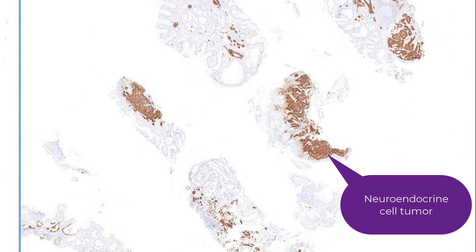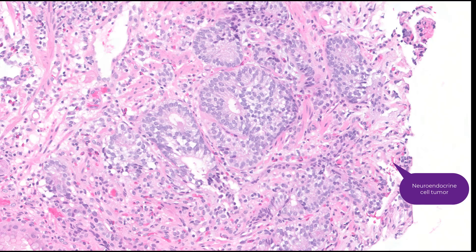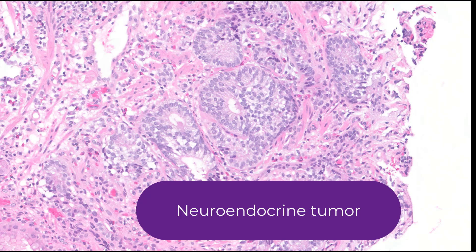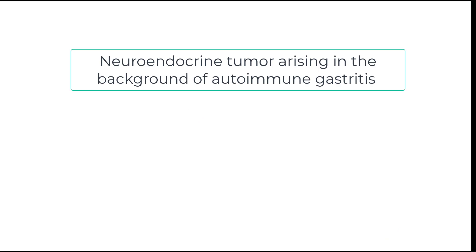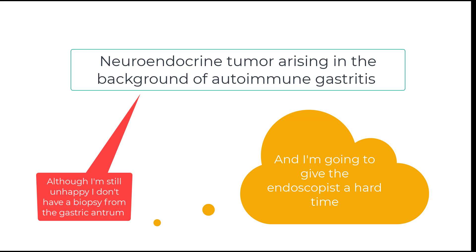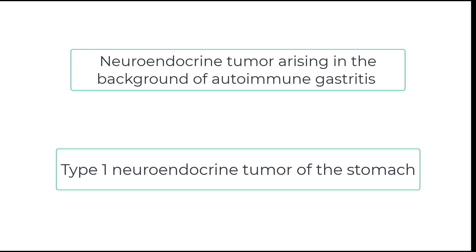By definition, a neuroendocrine tumor should measure at least 0.5 millimeters. At a very practical level, if an endoscopist sees a nodule — which this endoscopist did see — and a good proportion of that nodule is neuroendocrine, I call it a neuroendocrine tumor even if it is less than 0.5 millimeters in size. Here's a closer look at that tumor — clearly very monotonous, chromogranin positive, and they often show this gland-like phenotype, not to be mistaken for an adenocarcinoma. This is a neuroendocrine tumor arising in the background of autoimmune gastritis, which places it in the category of a type 1 neuroendocrine tumor of the stomach.